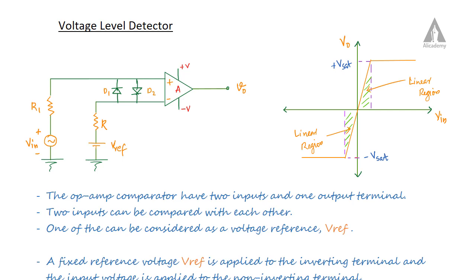In this lecture we are going to discuss about voltage level detectors. The operational amplifier uses the voltage level detector design. We have an op-amp where an input voltage is connected to the non-inverting terminal (positive terminal) and a reference voltage Vref is connected to the inverting terminal. This is an open loop configuration — there is no feedback.